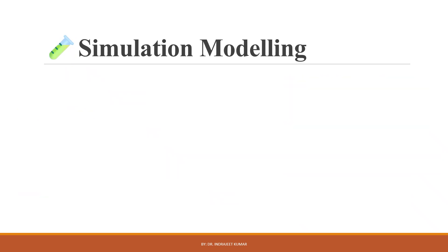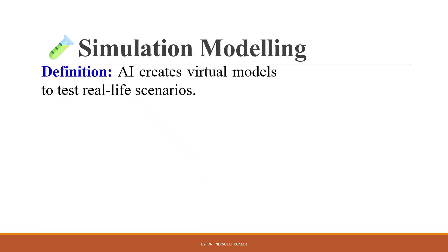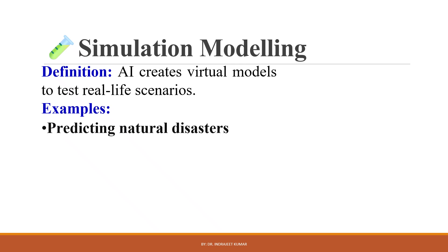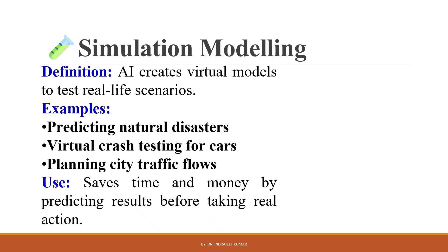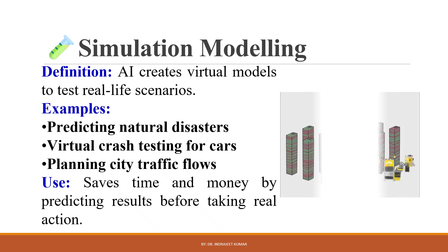Simulation modeling is about creating virtual versions of real-world systems like traffic, factories or hospitals. With AI, these simulations become smarter and more accurate. AI creates virtual models to test real-life scenarios. Examples include predicting natural disasters, virtual crash testing for cars, and planning city traffic flows. This saves time and money by predicting results before taking real action.